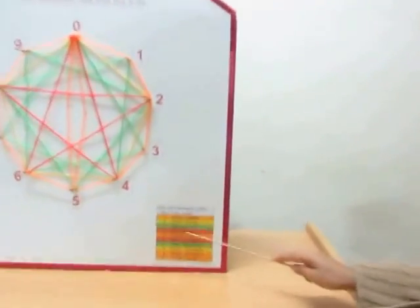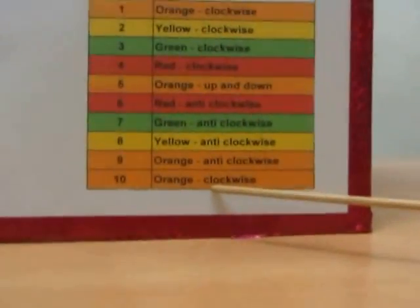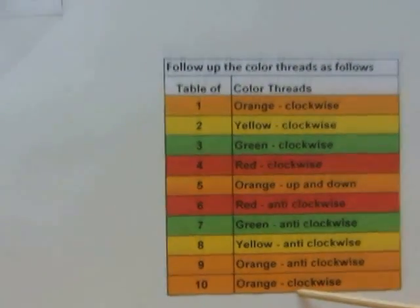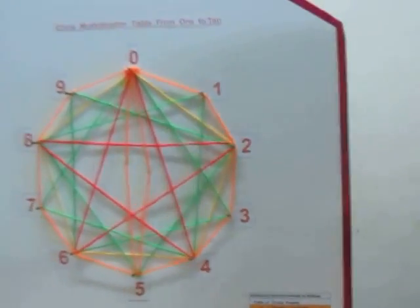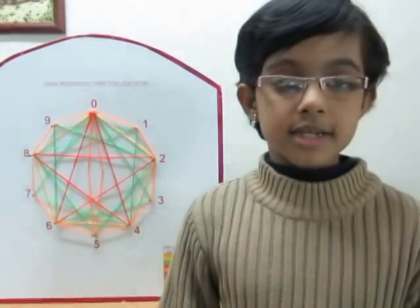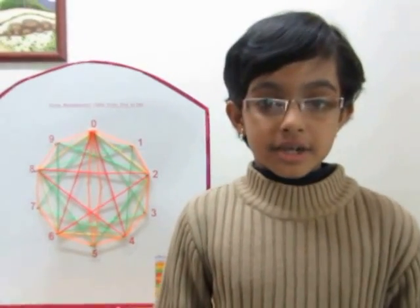As we have covered the 3 directions — clockwise, anticlockwise, and up and down — follow the chart to find out the other number tables. If you learn the colour threads, it is easy to memorise the table from 1 to 10. Thank you.